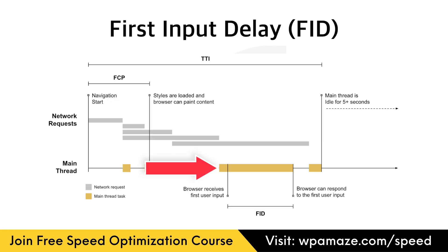First input delay is the time between when a user interacts with a page by clicking a link, tapping a button, or pressing a key, and when the web browser can respond to the user interaction. First input delay will be replaced with the new metric, interaction to next paint, also known as INP, in March 2024.